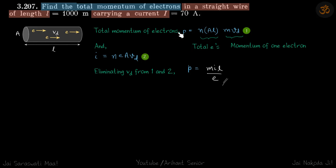Total momentum of electrons is equal to total number of electrons, that is n times volume. So volume of this piece of wire will be a into L times momentum of one electron, which is m into drift velocity.